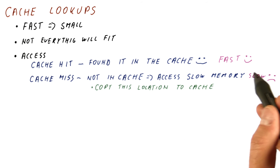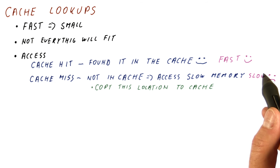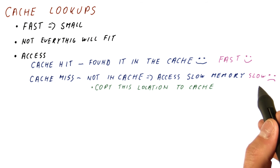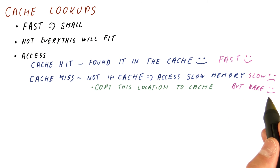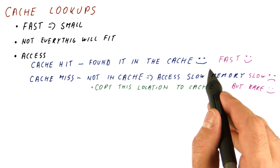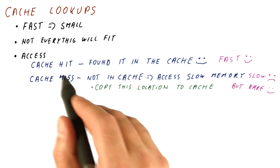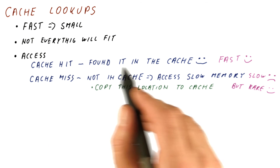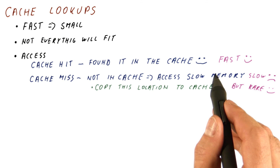When we have a cache miss, that is slow — that access is going to take some time. But that should happen very rarely. Most of the time when we need something, we find it in the cache. Or at least we hope to, and we want to design our caches so that that's how it works.